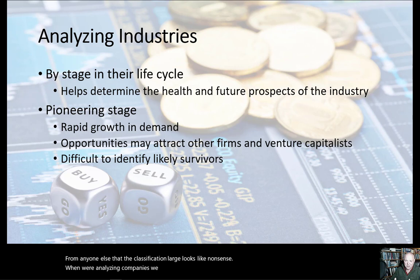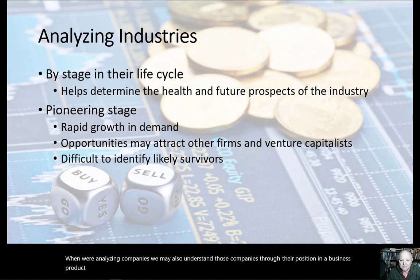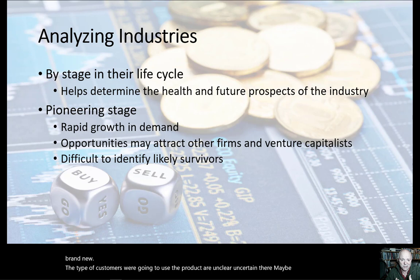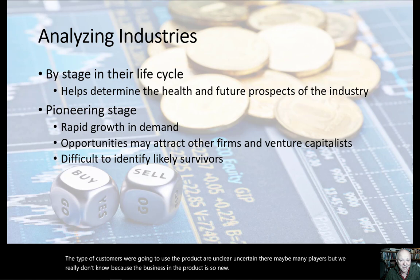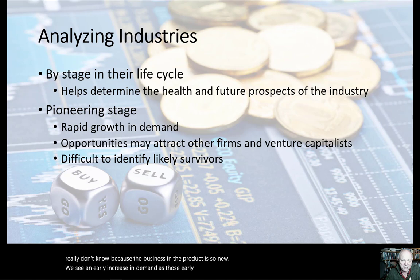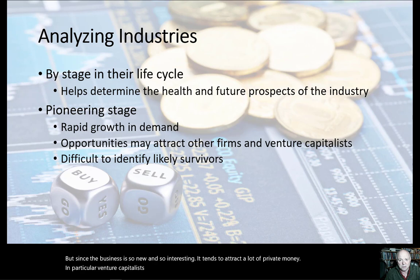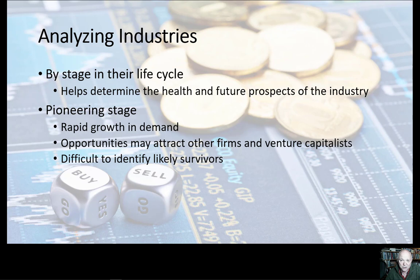When analyzing companies, we may also understand them through their position in a business product life cycle. That cycle is usually based on an embryonic or pioneering stage as the earliest stage, where the product is brand new, the type of customers are unclear, and there may be many players. We see an early increase in demand as early adopters buy the product. Since the business is new and interesting, it tends to attract a lot of private money — venture capitalists and seed capital financiers — and new companies enter the market. It's very hard at this stage to see which particular standard or product will become dominant.